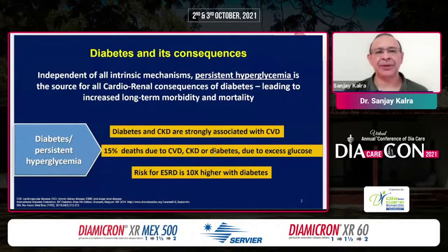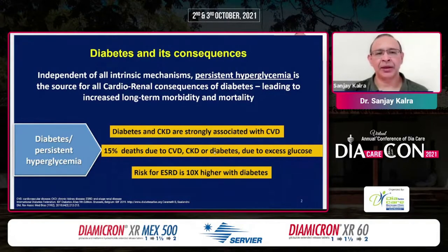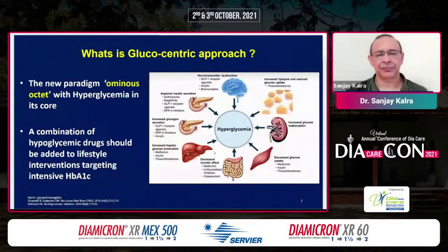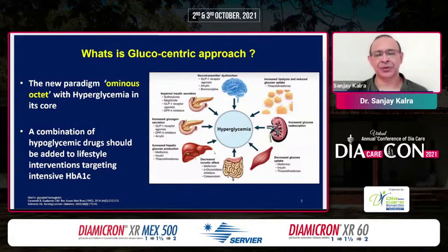We all know that diabetes is defined by hyperglycemia. Because of this hyperglycemia, there is vascular dysfunction, and that leads to morbidity and mortality, both from cardiovascular disease and kidney disease. DeFronzo coined the ominous octet, and what he suggested was that there are different pathophysiologic mechanisms, but finally the end result is hyperglycemia. So a concept of the glucose-centric approach was created.